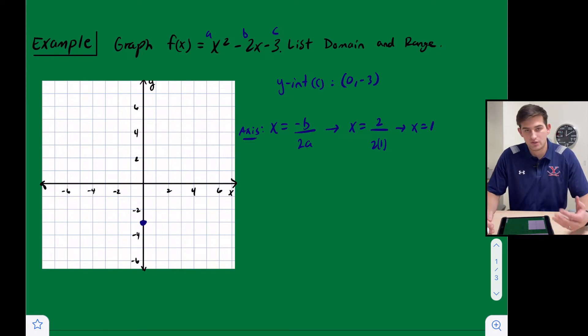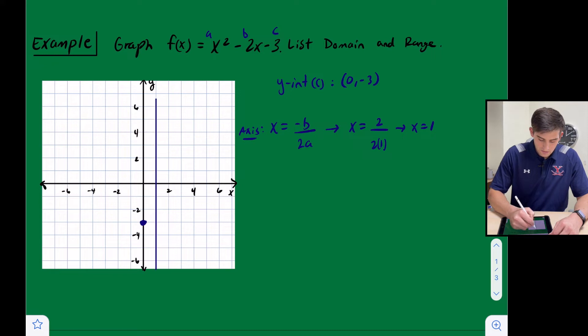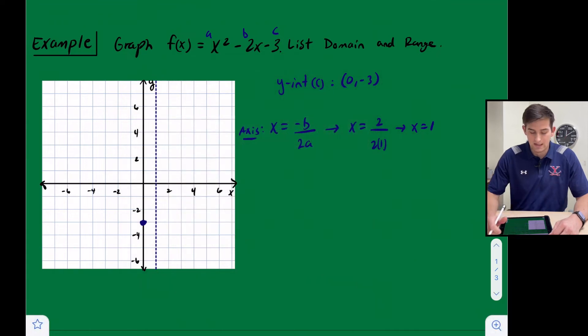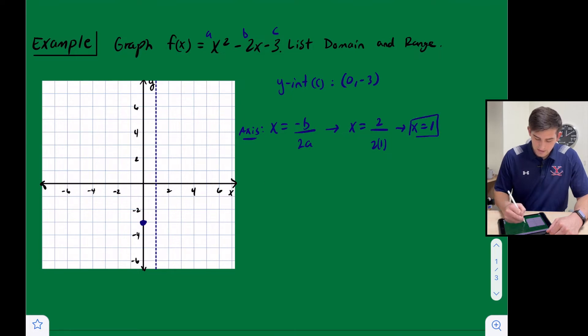So now what I'm going to do is I'm going to draw a vertical line through x equals 1, but then I'm going to make it a dashed line. So if I'm doing this on paper, I'm going to go ahead and make that a dashed line, just like that.